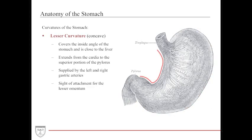The greater curvature is a site of attachment for the greater omentum. The lesser curvature is on the concave side of the stomach — the inside angle, close to the liver. It also extends from the cardia to the pylorus but covers a much shorter distance. It is supplied by the left and right gastric arteries and is a site of attachment for the lesser omentum.